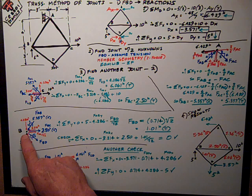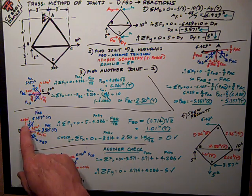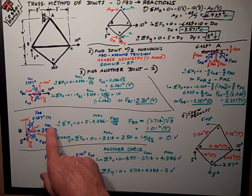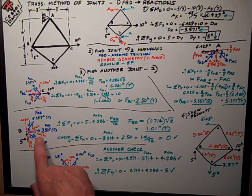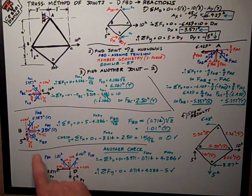So I show that force pointing at the joint, 5.357, break it up into its components. I've got the force I just got from FBC, its tension, so it's pulling away from the joint, 2.5.